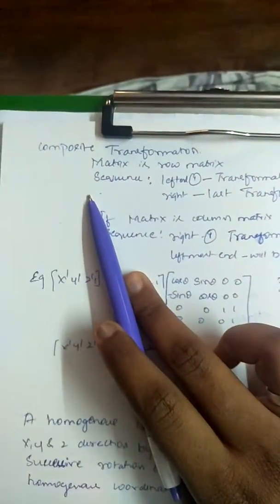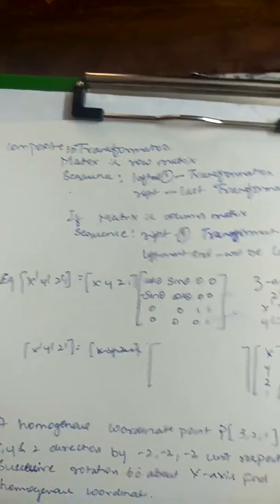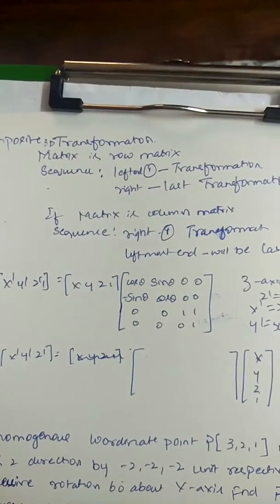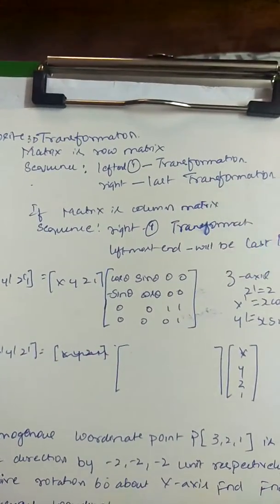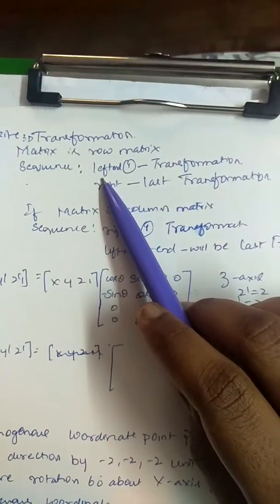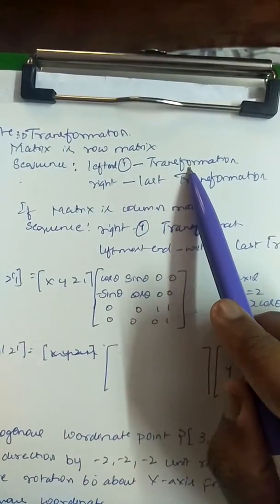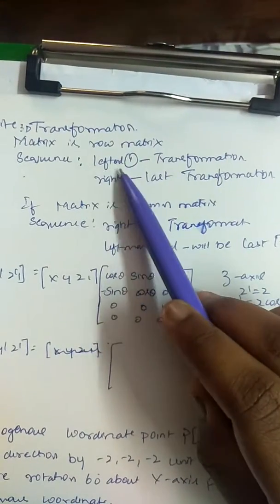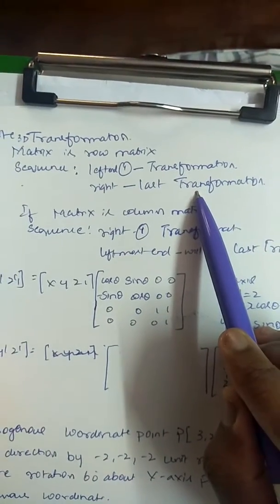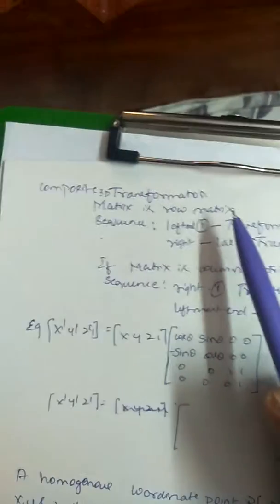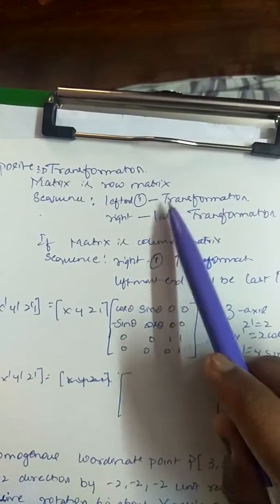Let's discuss composite 3D transformation operations. Before we perform a composite 3D transformation, one thing to note: if the matrix is a row matrix, the sequence of matrices to write in the operation is as follows — towards the left-hand side it will be the first transformation matrix, and towards the right-hand side it will be the last transformation matrix.